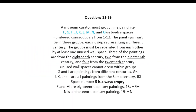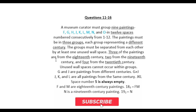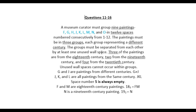A museum curator must group 9 paintings in 12 spaces numbered consecutively from 1 to 12. The paintings must be in 3 groups, each group representing a different century. The groups must be separated from each other by at least one unused wall space. 3 of the paintings are from the 18th century, 2 from the 19th century, and 4 from the 20th century.